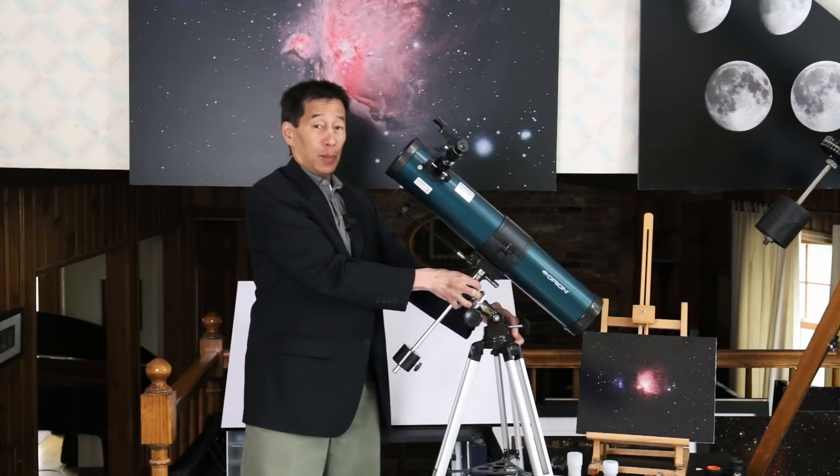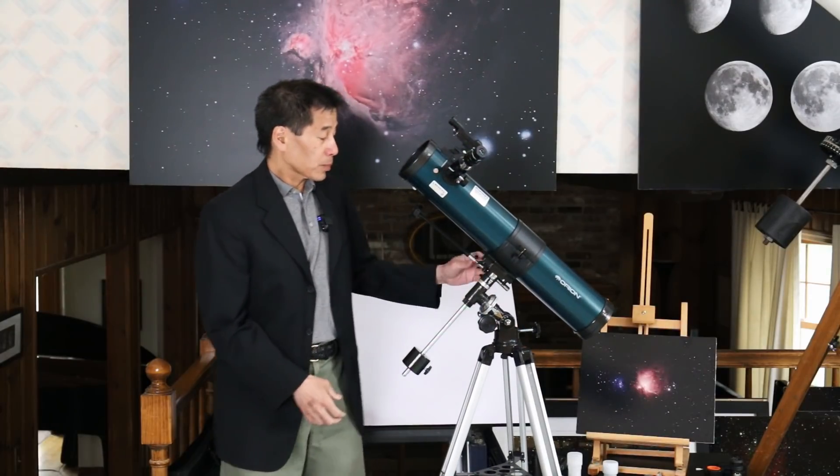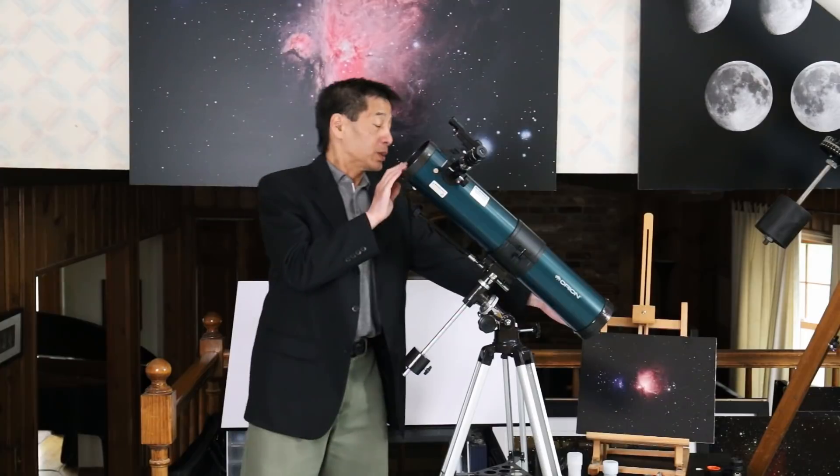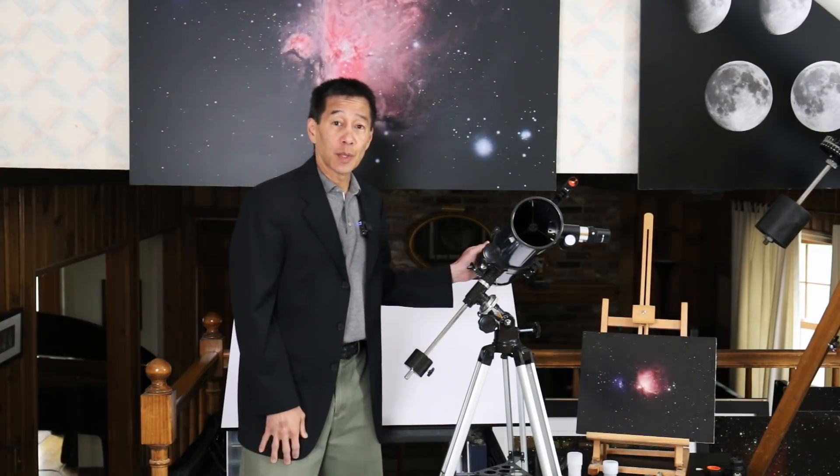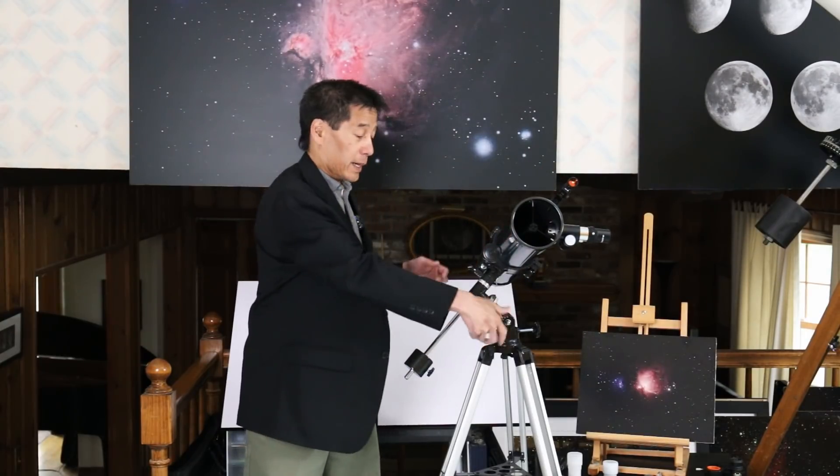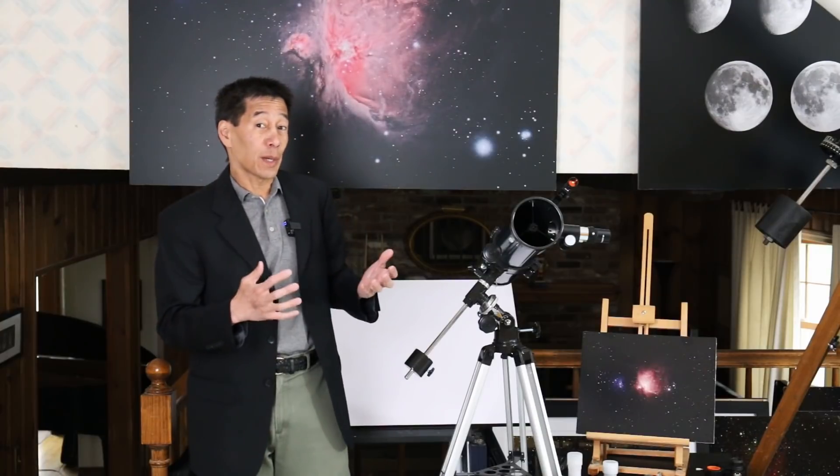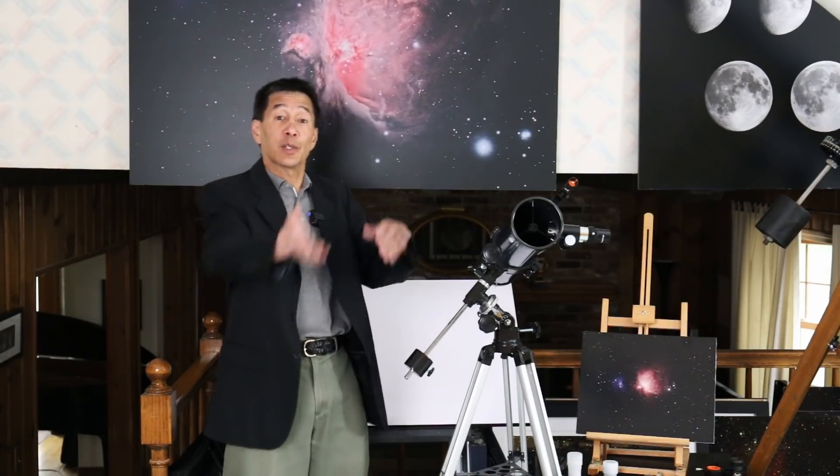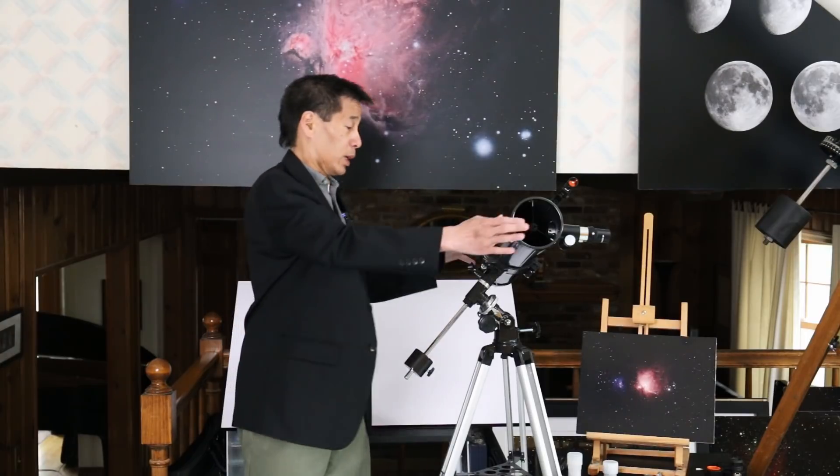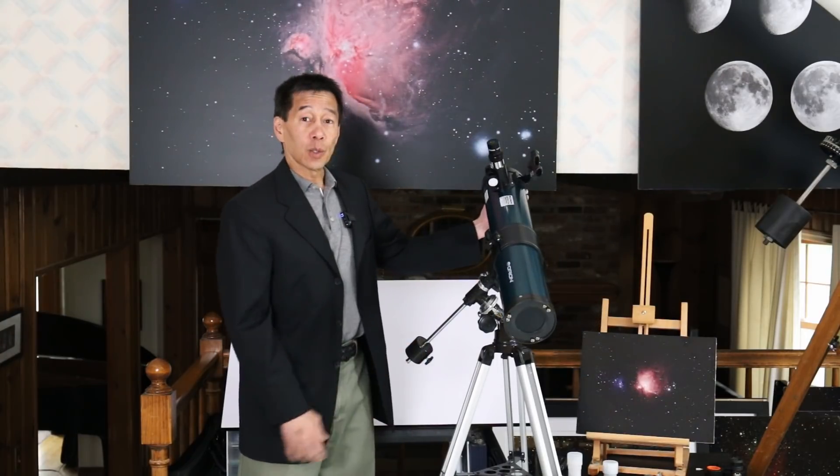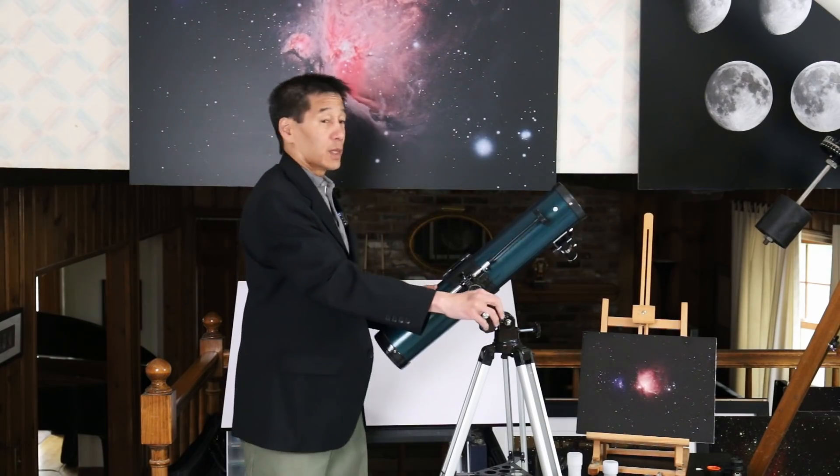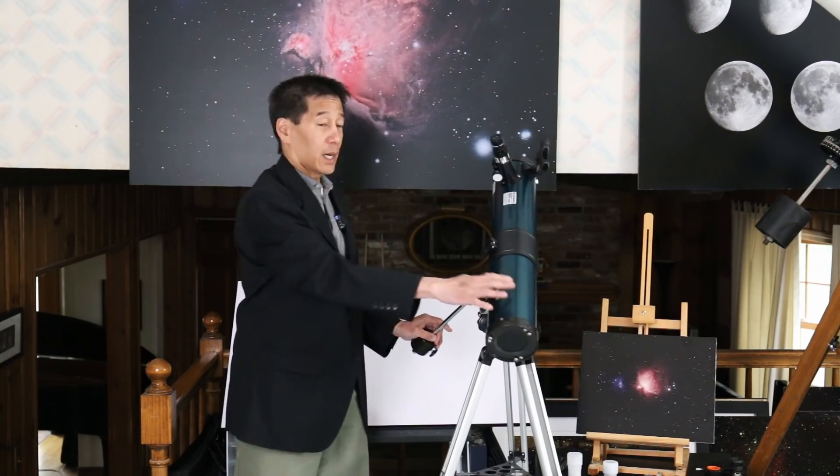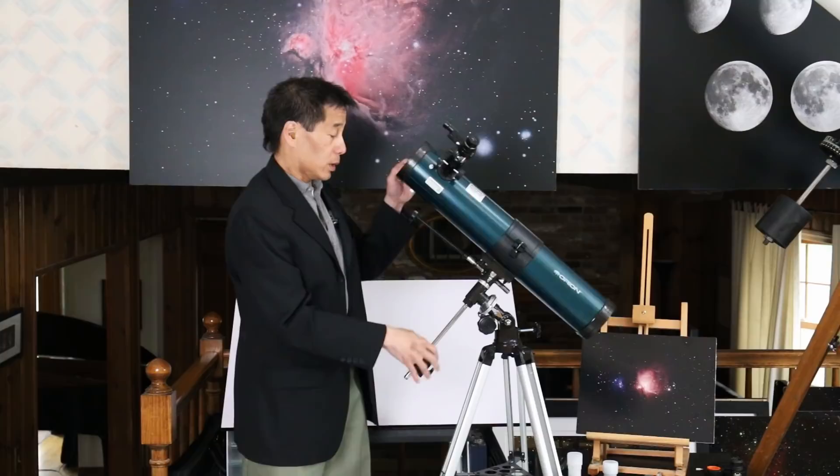Let's say we are properly polar aligned here. And let's say I want to look at something out towards you. I would loosen these locks and just do this. And again, if I want to track, I'll just turn this knob. If you think about it, the mount does not know or care where the telescope is pointed. It's just going to keep tracking. If I want to look in the other direction, I go like this. If I want to look south, I can do this. I can access any point in the sky using this equatorial mount.